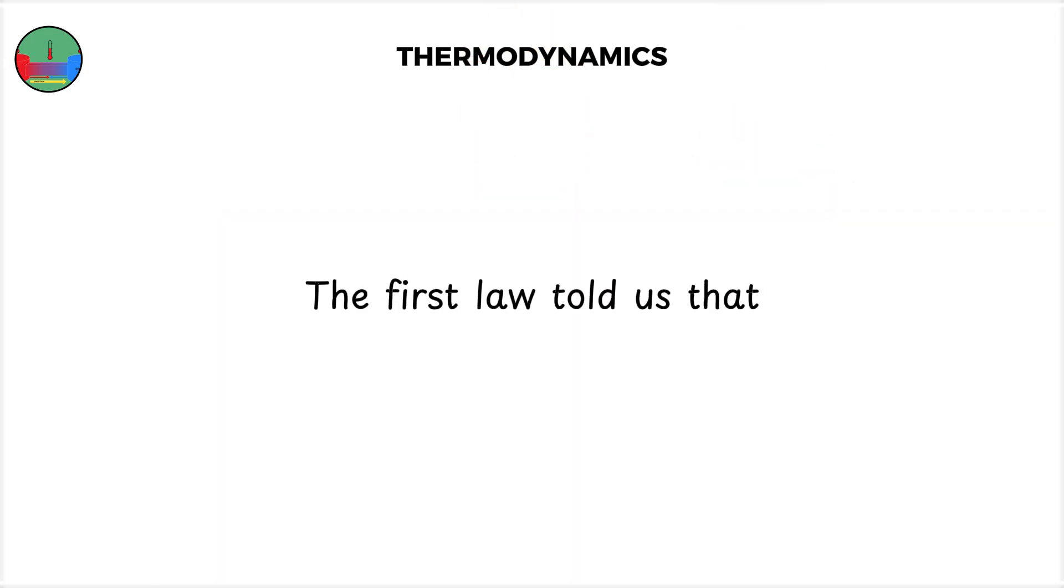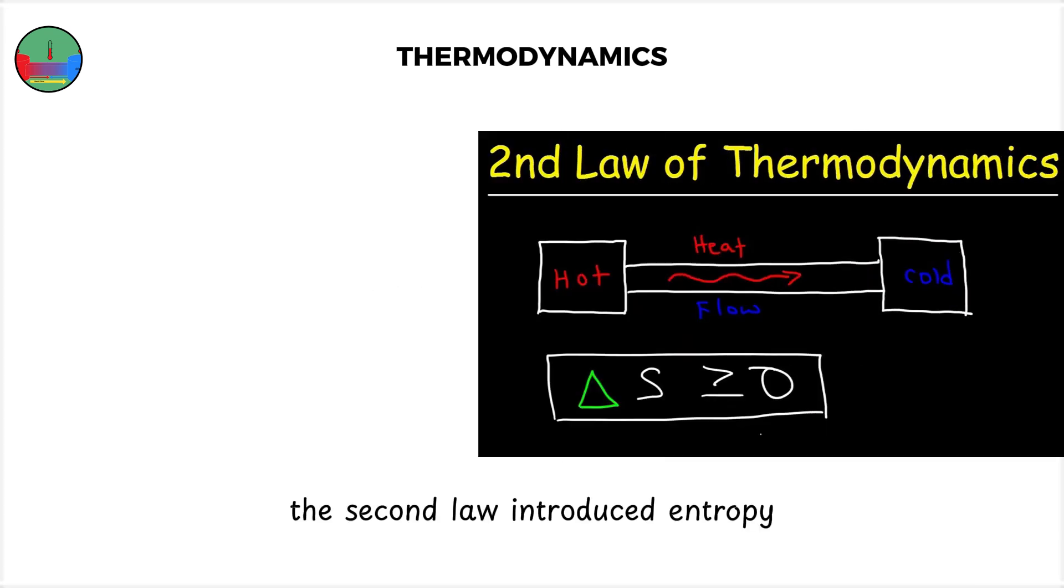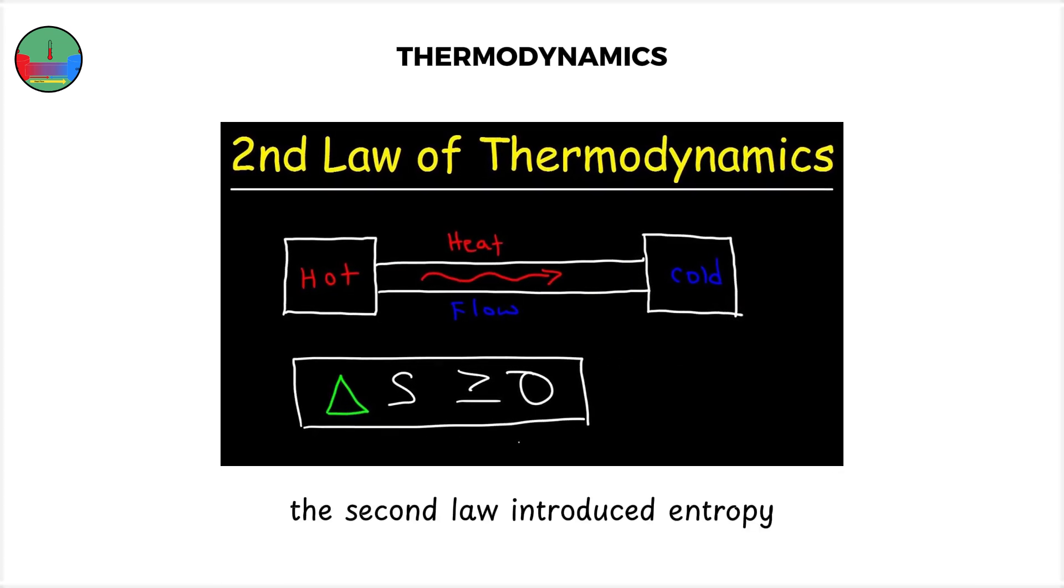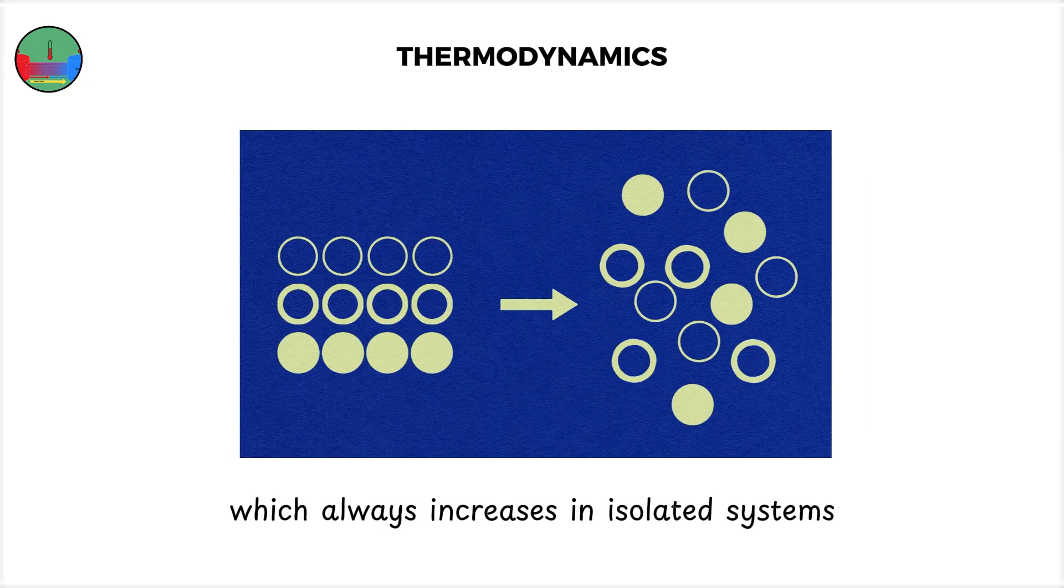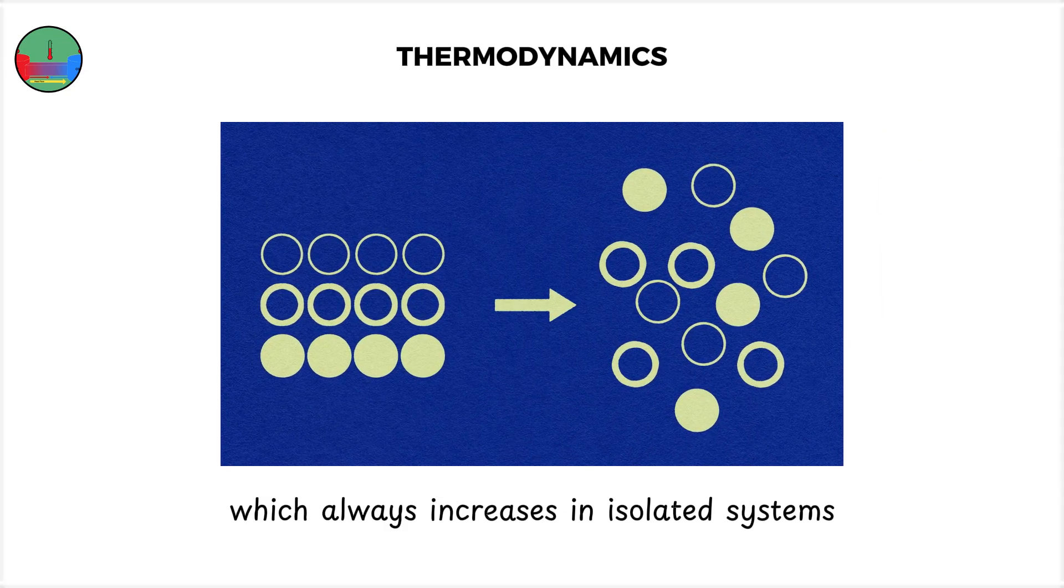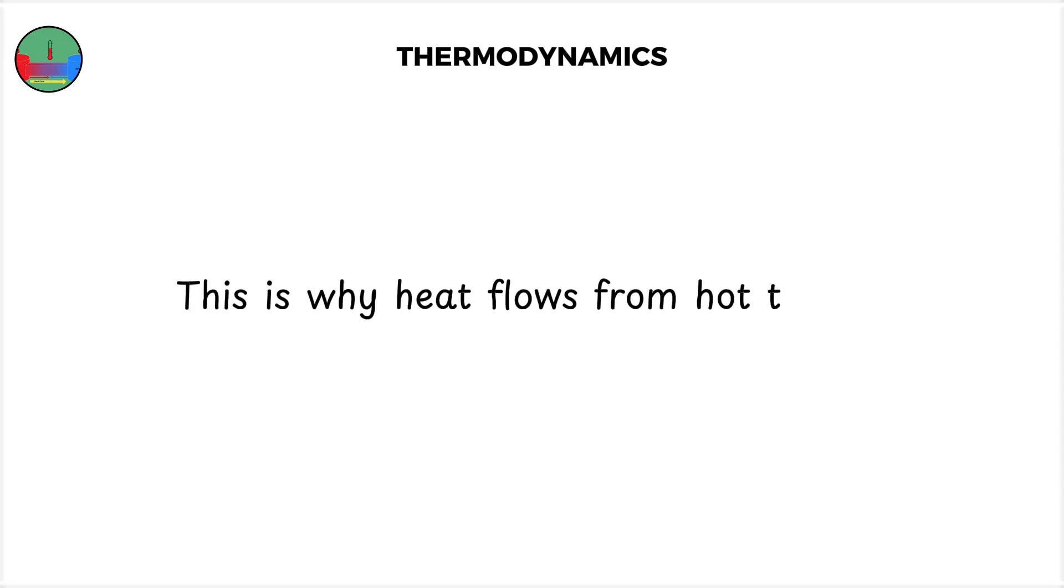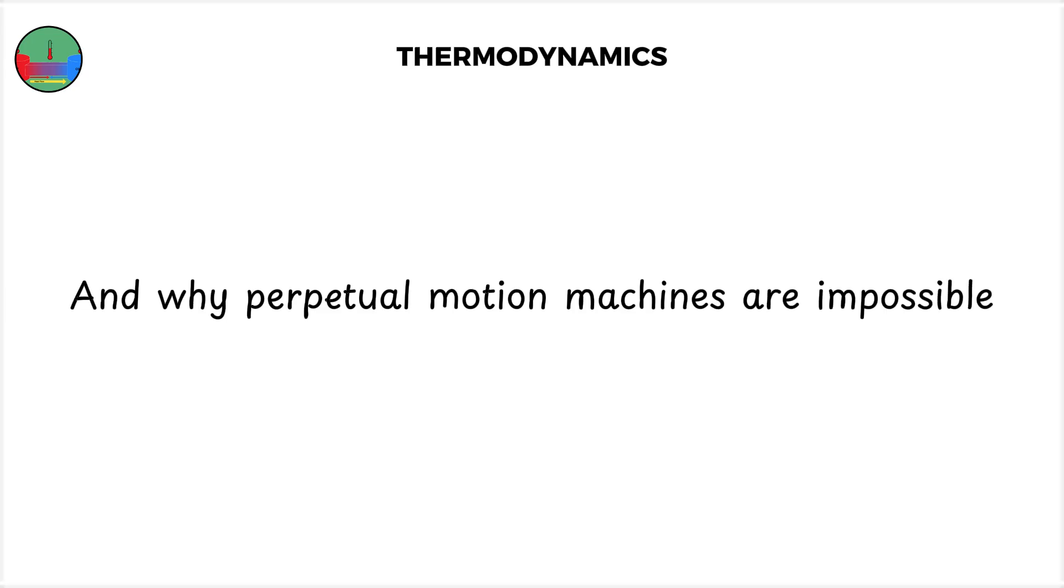The first law told us that energy can't be created or destroyed, it only changes form. The second law introduced entropy, the measure of disorder, which always increases in isolated systems. This is why heat flows from hot to cold, and why perpetual motion machines are impossible.